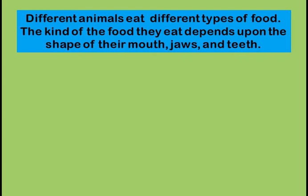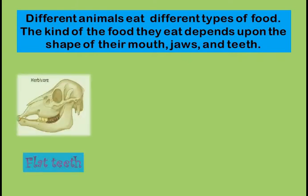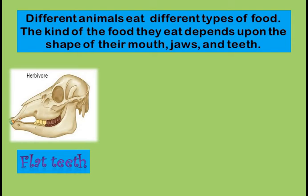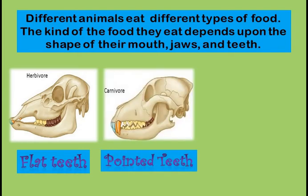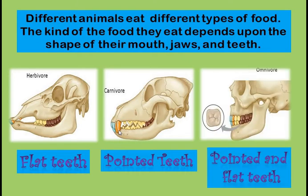Different animals eat different types of food and the kind of food they eat depends upon the shape of their mouth, their jaws and their teeth. Herbivorous have got flat teeth, carnivorous have got pointed teeth, and omnivores have got both pointed teeth and flat teeth in their mouth.